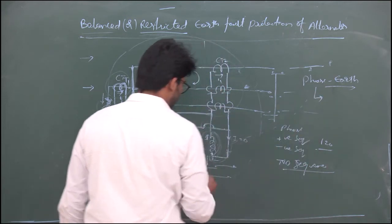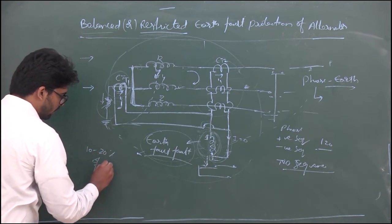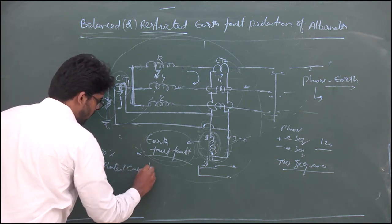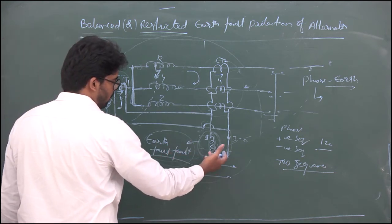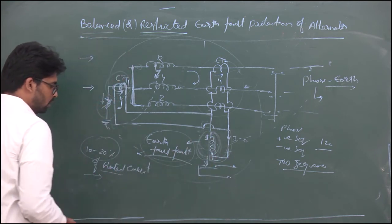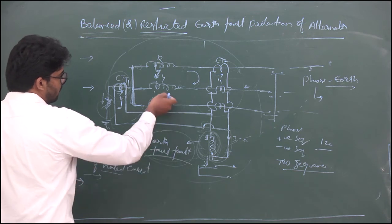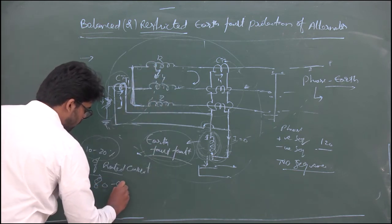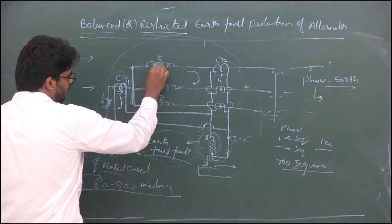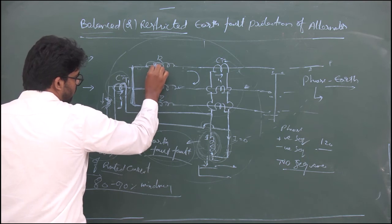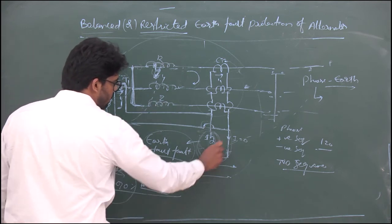In general, this relay coil is configured to operate at 10 to 20 percent of the rated current. So this relay will be operated only at 10 to 20 percent — this design of the relay coil will be rated up to 10 to 20 percent, so it is not needed to operate at higher rated current. This coil will protect about 80 to 90 percent of the winding. If the fault occurs in this winding section, the winding section — about 80 to 90 percent of the winding section — will be protected by this relay coil.